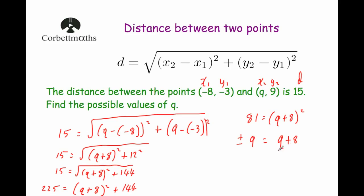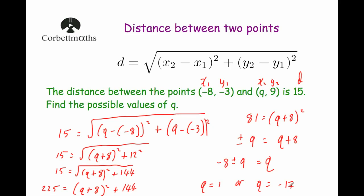We want to find q on its own, so we subtract 8 from both sides: q equals minus 8 plus or minus 9. So q equals minus 8 plus 9, which is 1, or q equals minus 8 subtract 9, which is minus 17. There are two solutions: q can equal 1, or q can equal minus 17.